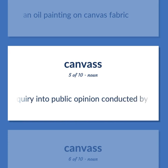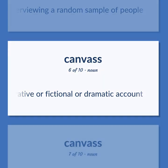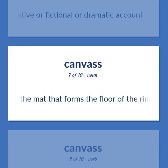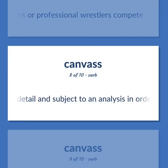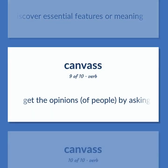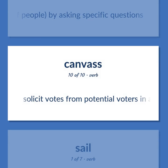An inquiry into public opinion conducted by interviewing a random sample of people. The setting for a narrative or fictional or dramatic account. The map that forms the floor of the ring in which boxers or professional wrestlers compete. Consider in detail and subject to an analysis in order to discover essential features or meaning. Get the opinions of people by asking specific questions. Solicit votes from potential voters in an electoral campaign.